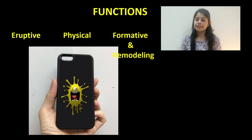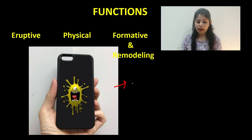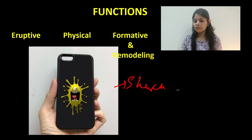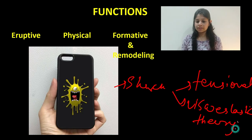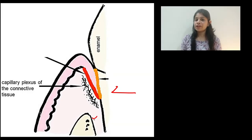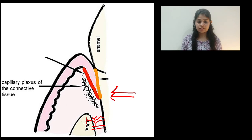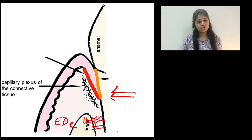Another key physical function is the transmission of occlusal forces acting on the tooth to the bone. The periodontal ligament acts as a shock absorber, transmitting forces onto the alveolar bone. This is explained by two theories: the tensional theory and the viscoelastic theory. In the tensional theory, the periodontal ligament acts as the primary agent for force displacement. Normally the periodontal ligament fibers are wavy; when forces are applied, they unfold and straighten, transmitting forces to the alveolar bone, which then undergoes elastic deformation.